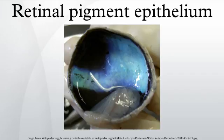Pathology. In the eyes of albinos, the cells of this layer contain no pigment. Dysfunction of the RPE is found in age-related macular degeneration and retinitis pigmentosa. RPE cells are also involved in diabetic retinopathy.